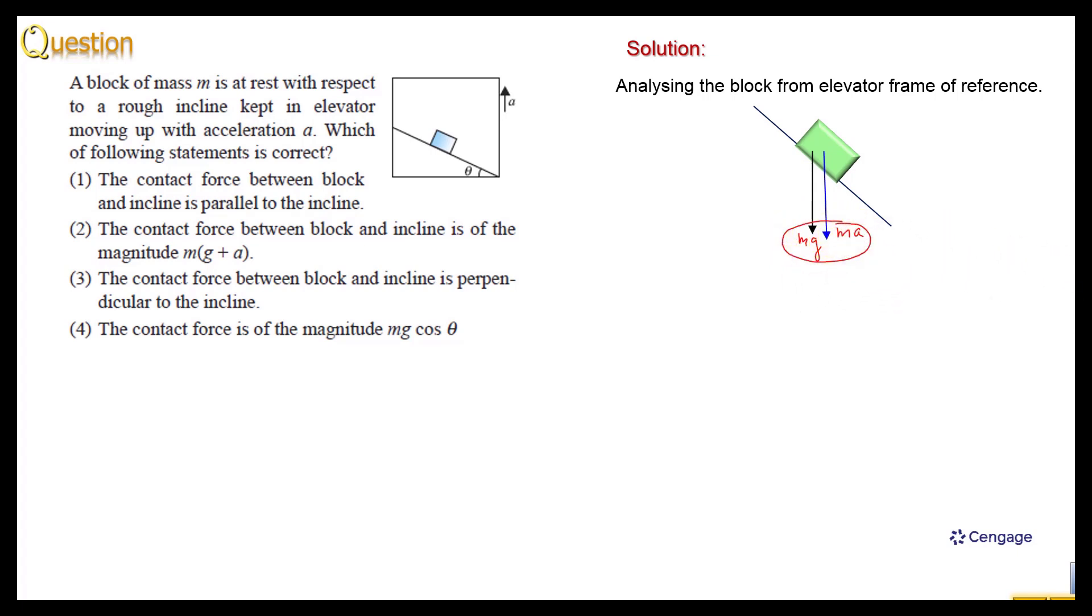We can make the component of mg plus a parallel to the incline and perpendicular to the incline. This is the component mg plus a sin theta and mg plus a cos theta.